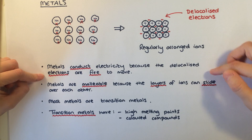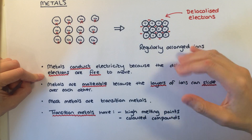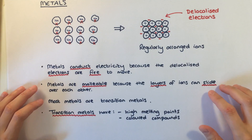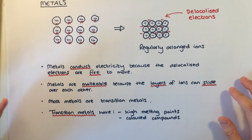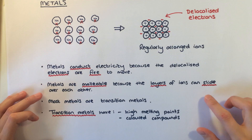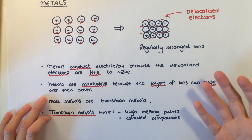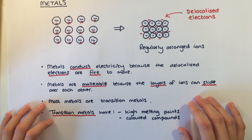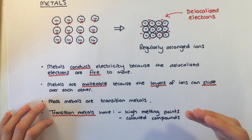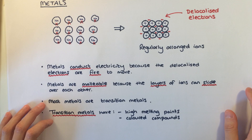Because the layers of ions are able to slide and move around one another, metals can be hammered or pressed into a particular shape without breaking. We say that they are malleable. Most of the metals are in a group called the transition metals, and they all have certain properties in common such as high melting point and the fact that compounds of these metals are coloured.